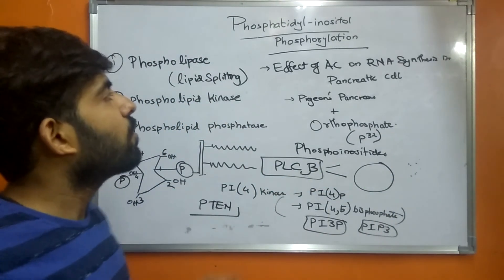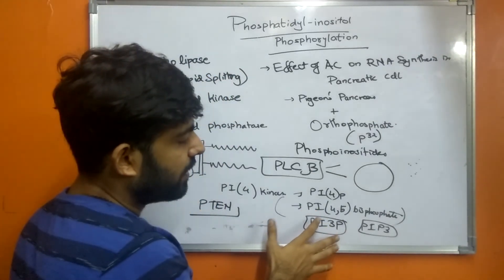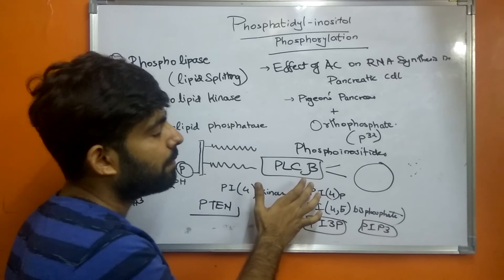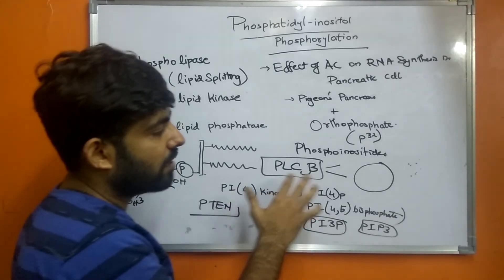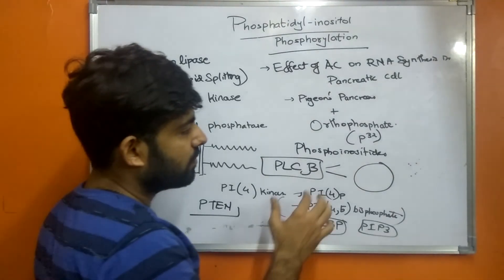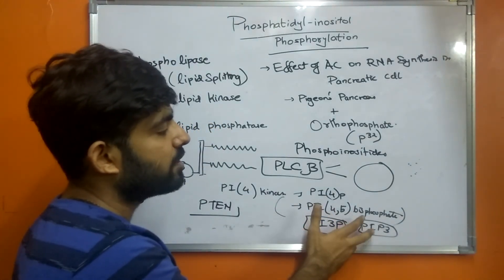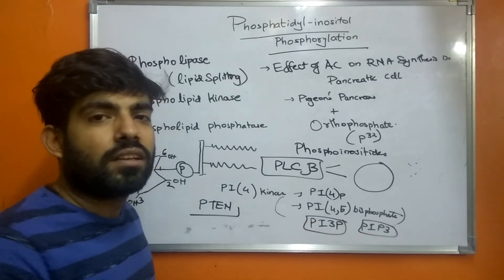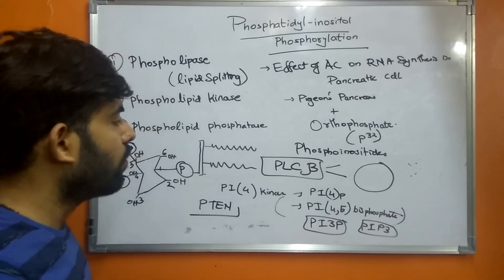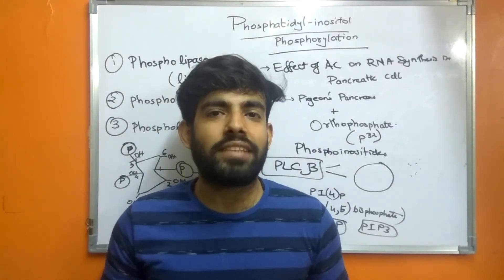In summary: phosphatidyl inositol phosphorylation leads to the formation of phosphatidyl inositol 4,5-bisphosphate, which further binds to the PH domain of phospholipase C-beta. This leads to hydrolysis of the derivative, and the derivatives act as second messengers. Furthermore, PIP3, formed by phosphorylation of phosphatidyl inositol 4,5-bisphosphate, acts in chemotaxis by binding to actin proteins. This was about phosphatidyl inositol phosphorylation — if you liked the video, please like, subscribe, and share. Thank you.